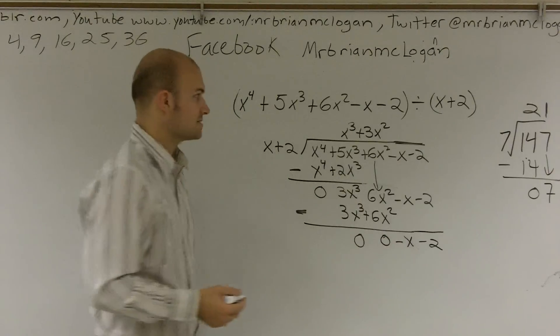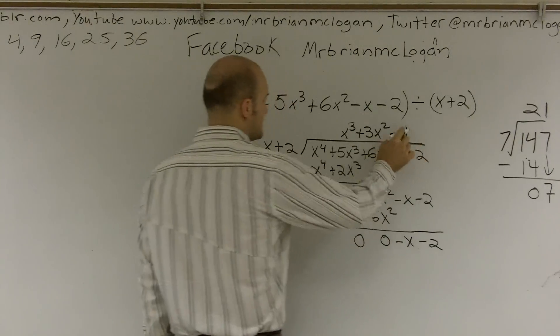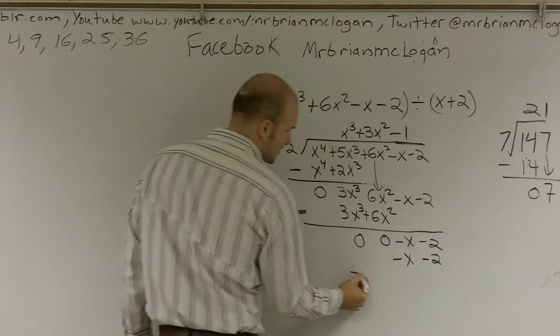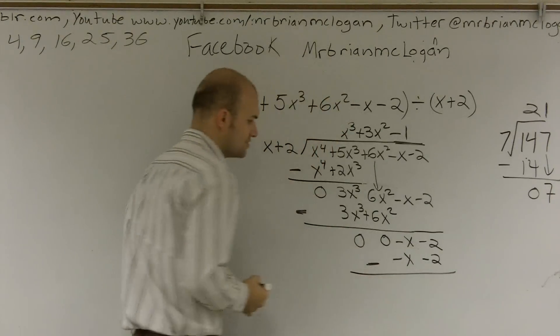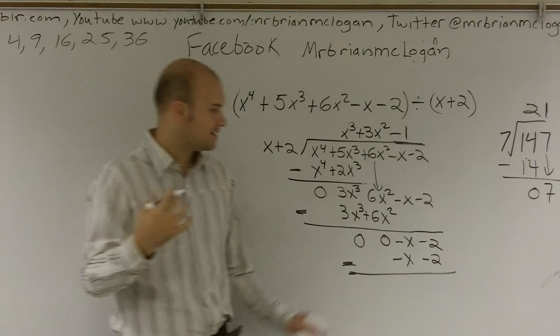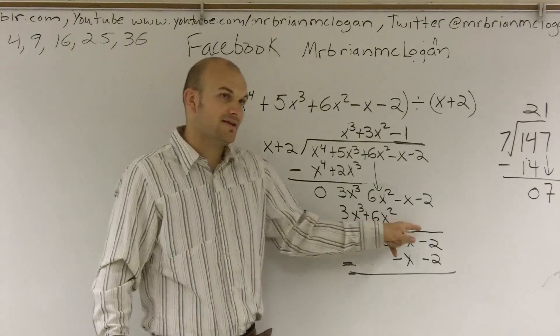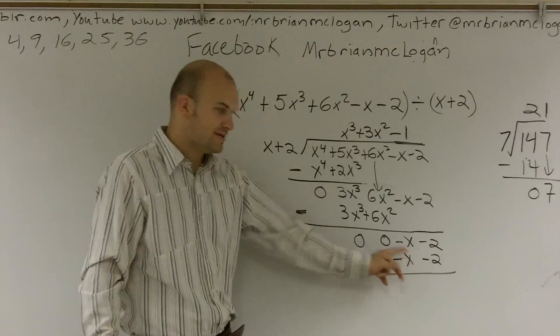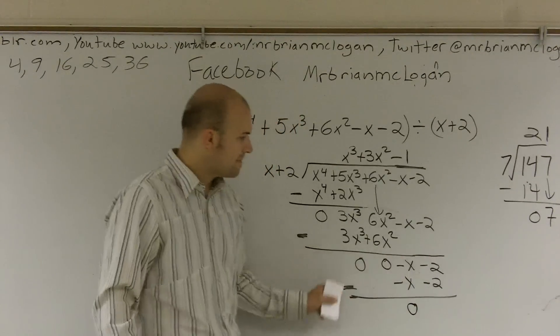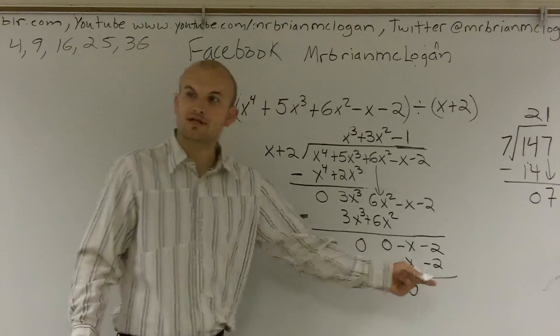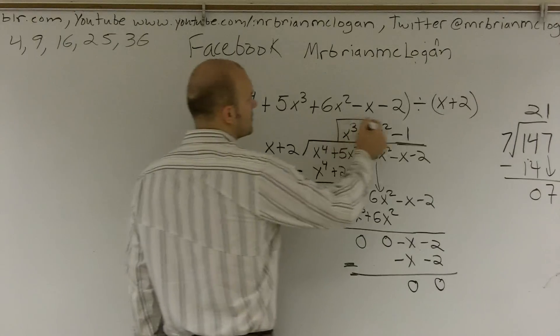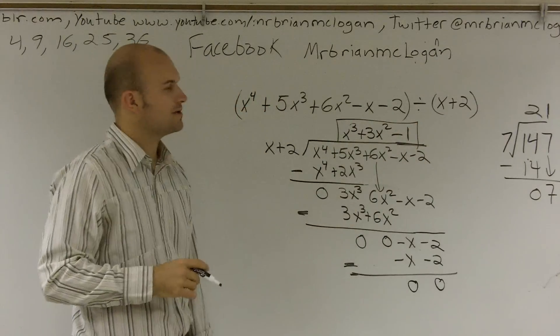So x goes into negative x, negative 1 times. Negative 1 times x is a negative x. Negative 1 times 2 is a negative 2. Again, we're going to subtract these two rows. I'm going to put this negative sign back out here. So just be very careful, guys, when you're doing this. Because this is where the double negative is where a lot of students make a mistake. A negative x minus a negative x. These two negatives cancel out to make it a positive, right? So this is going to end up going to give us a 0. Negative 2 minus a negative 2 is just like negative 2 plus 2, which also gives us a 0. So therefore, we do not have a remainder. And our final portion is going to be x cubed plus 3x squared minus 1 is our final answer.